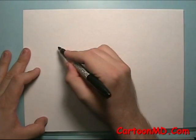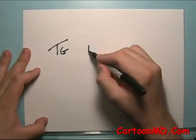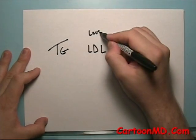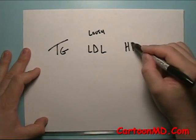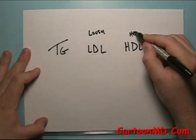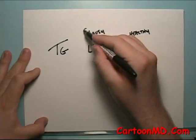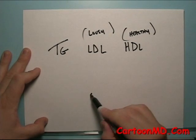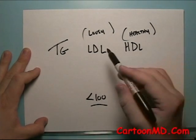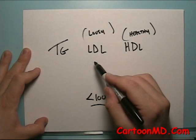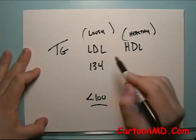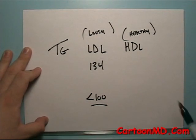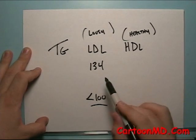All cholesterol medications will have an impact on cholesterol numbers — that's their purpose. Your triglycerides and your LDL cholesterol, which is the lousy cholesterol — if these numbers are out of whack, let's say in someone with diabetes, the goal for LDL might be below 100. If a person's LDL cholesterol number is 134, adding a statin drug will tend to push this downward and may get it below 100.